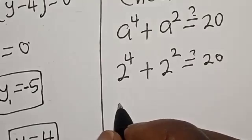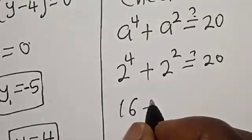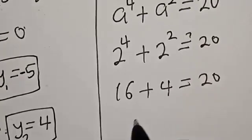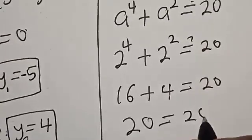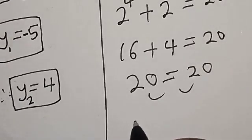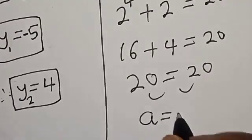2^4 is 16, plus 2^2 is 4, equals 20. The left-hand side equals the right-hand side. We've satisfied the given equation at a = 2.